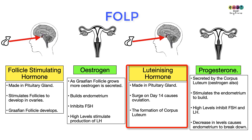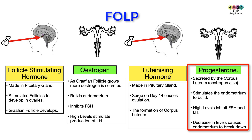A sudden surge in Luteinizing Hormone on day 14 causes ovulation — rupture of the Graafian follicle. What remains becomes the corpus luteum. The corpus luteum secretes progesterone and also estrogen, stimulating the endometrium to build up further. High levels inhibit FSH and LH secretion, and a drop in progesterone levels will cause menstruation.